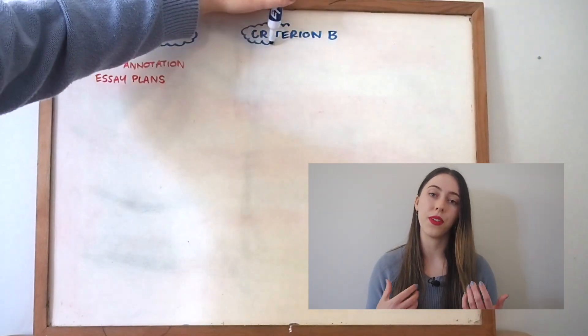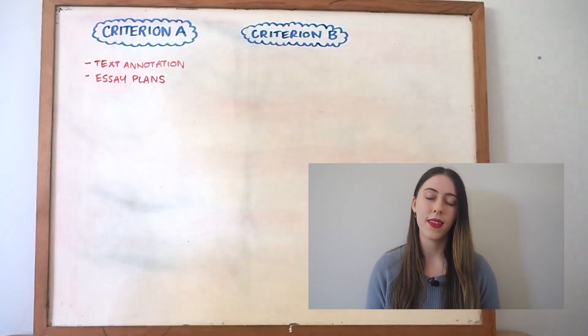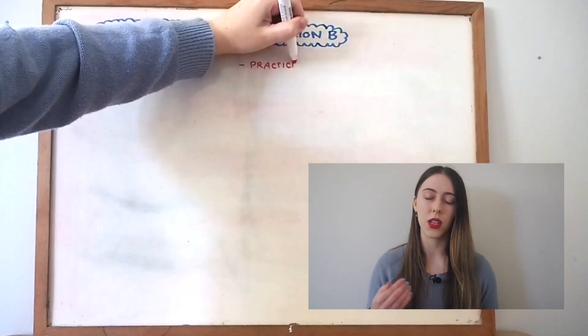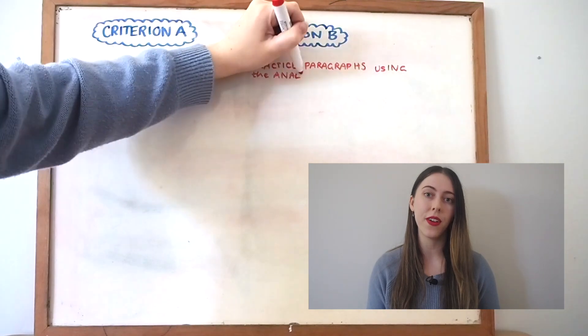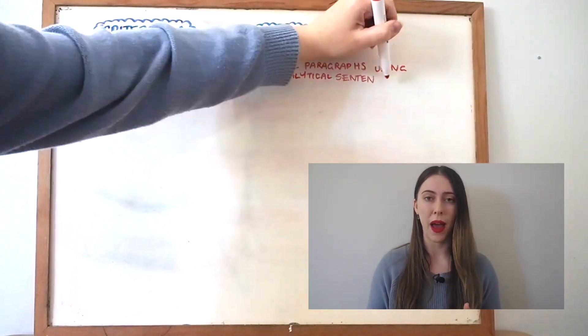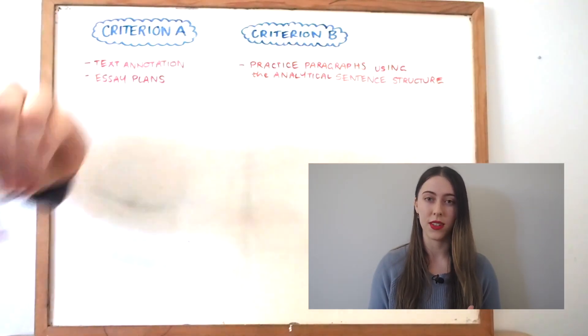Then for criterion B, which is about your appreciation of the writer's choices, what helped me was really remembering the analytical sentence structure that I discussed in the previous video and then writing practice paragraphs with this at the forefront of my mind. Then going back over those paragraphs afterwards and ticking off with the scaffold next to me - did I include the technique, the effect, the meaning, and then linking that back to my topic sentence and my thesis.